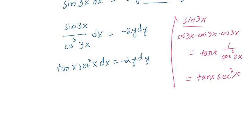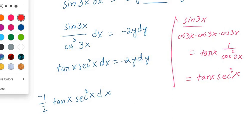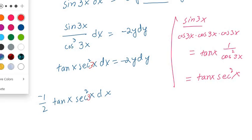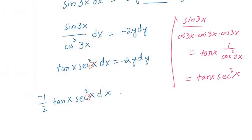I'm moving the minus and the 2 to this side because I want all the constants with X. So you can write minus 1/2 multiplied by tan(3x) · sec²(3x) dx — sorry, there must be a 3 here. There must be a 3, so now we are almost close to our solution.